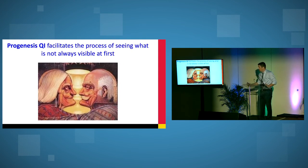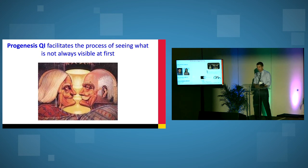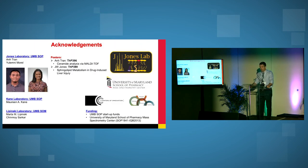Okay. With that, I'll circle back around to this picture here. Maybe you've had some time for the coffee to take effect. And so you can kind of see the details within the image. Progenesis QI really facilitates a process for us for seeing what is not always visible at first. It really allows us to kind of focus in on particular groups that may not have been obvious at first thought. Okay. With that, I'll wrap up.